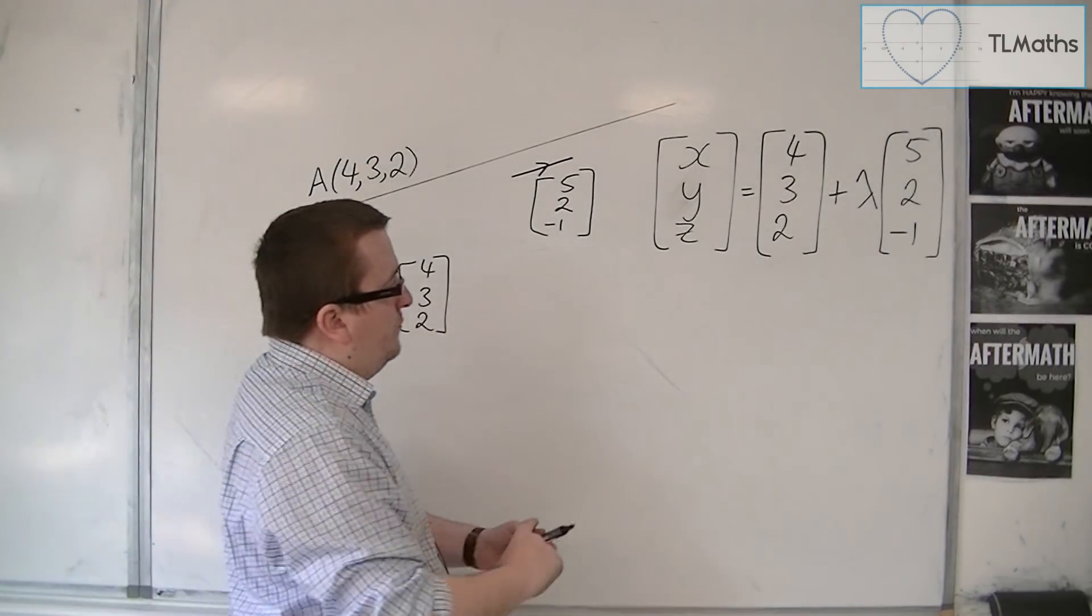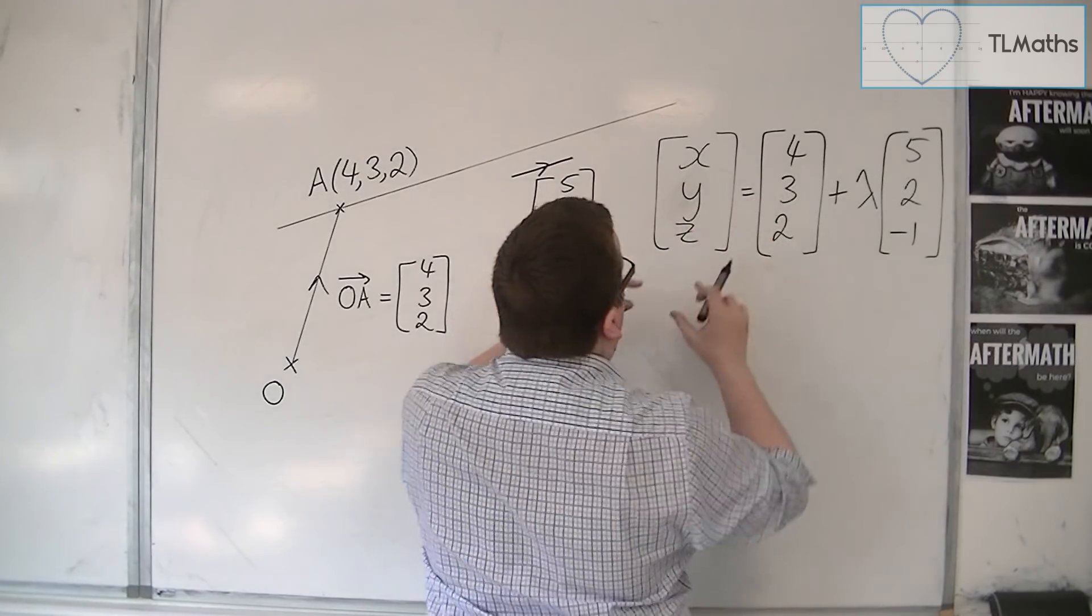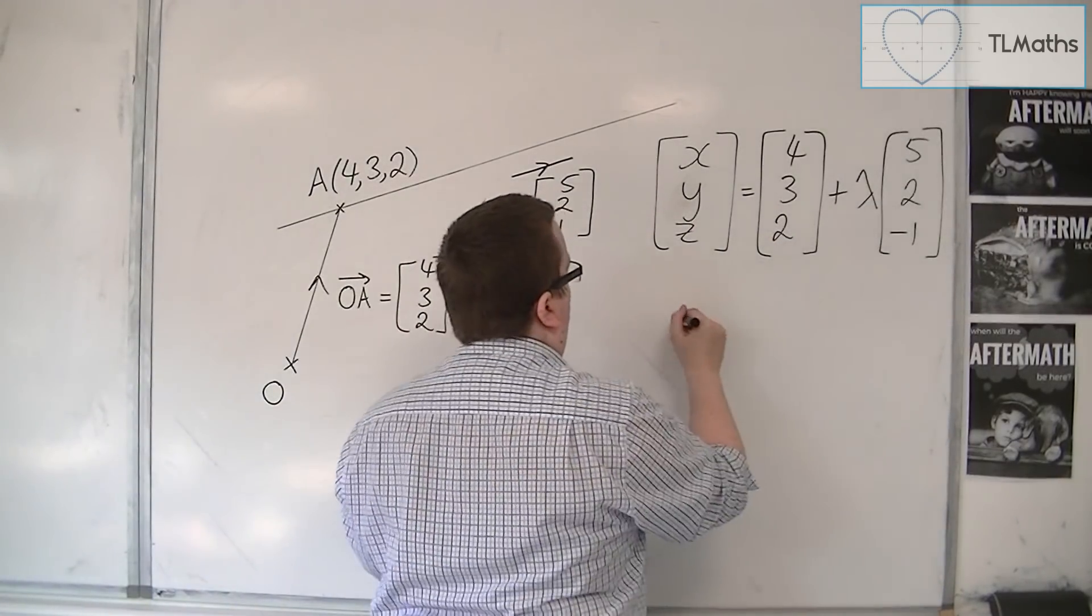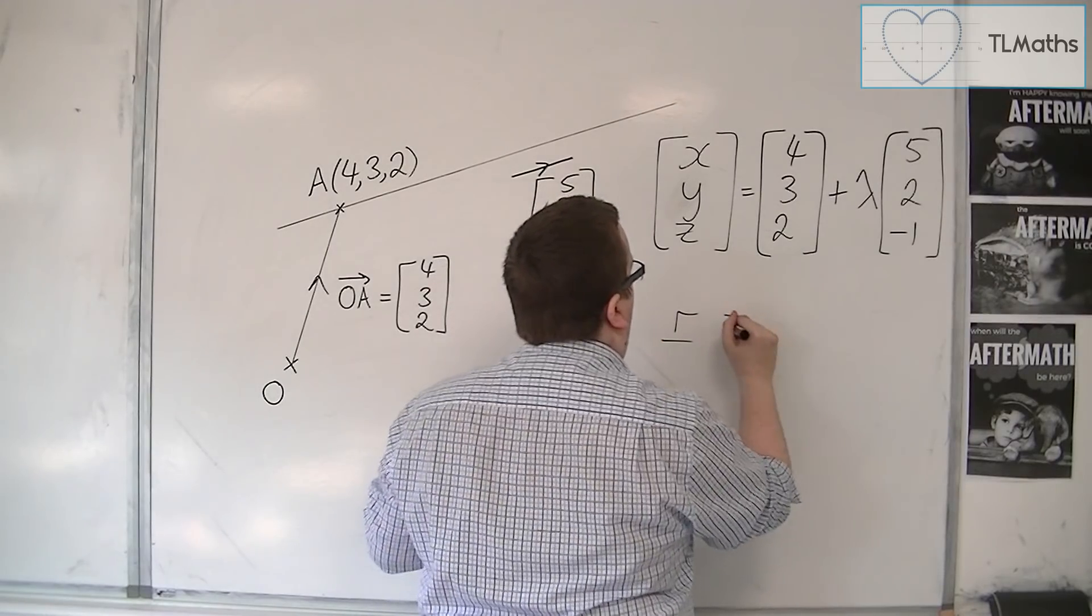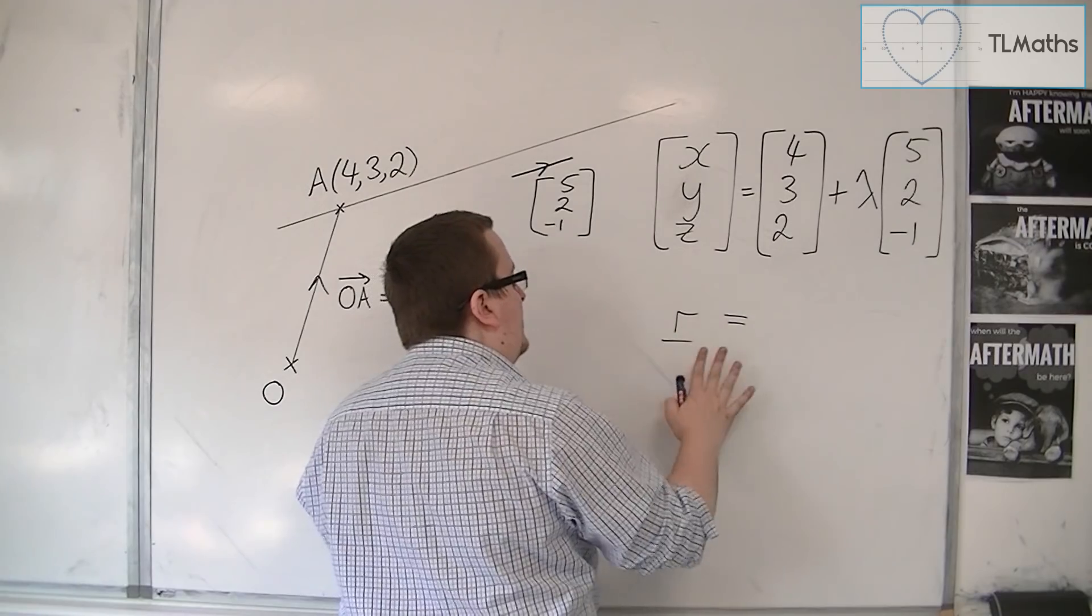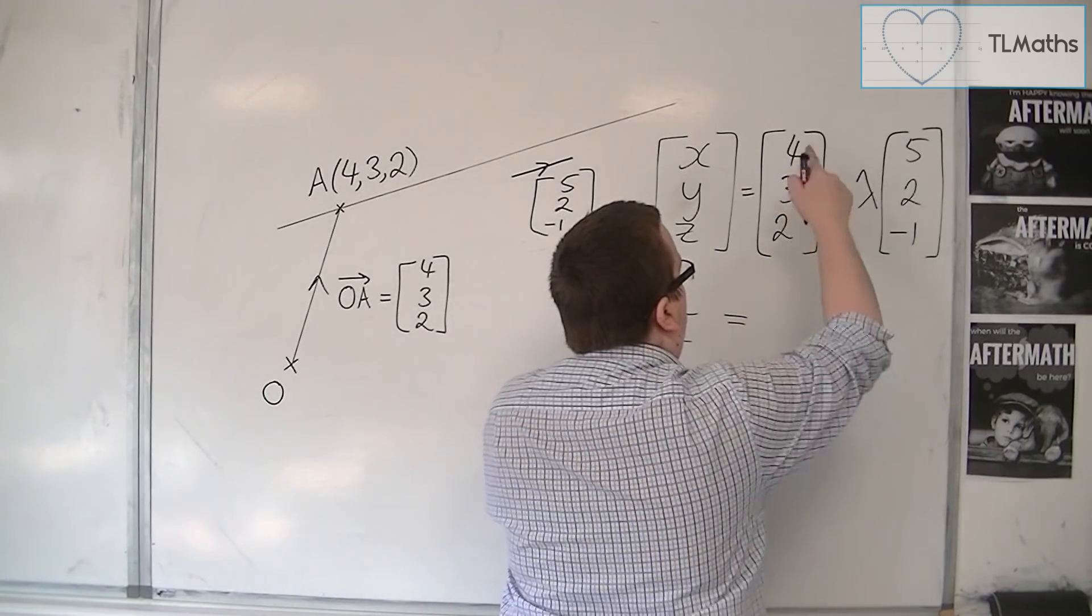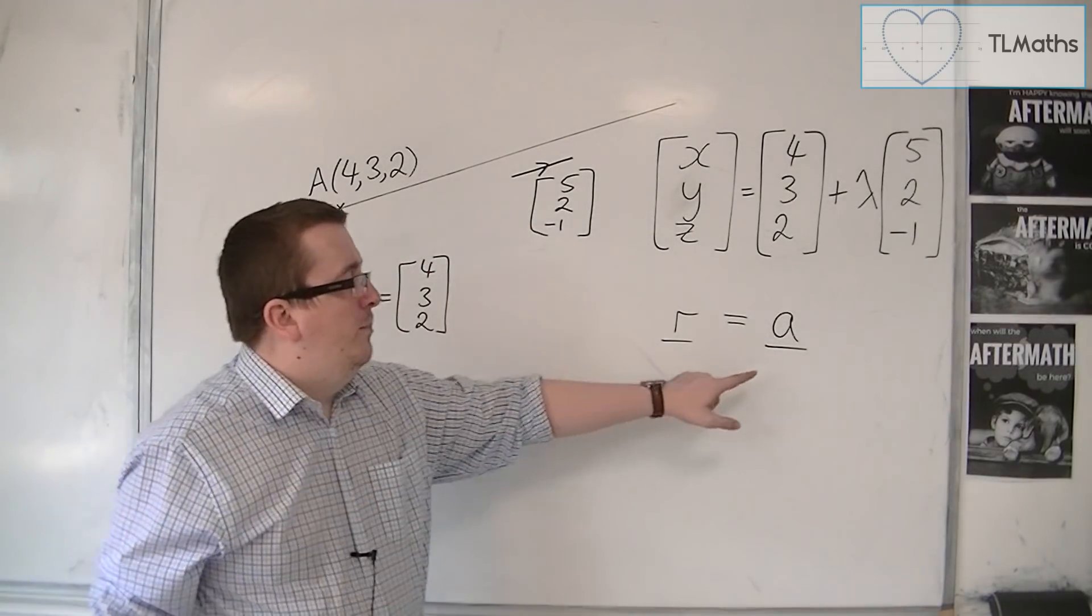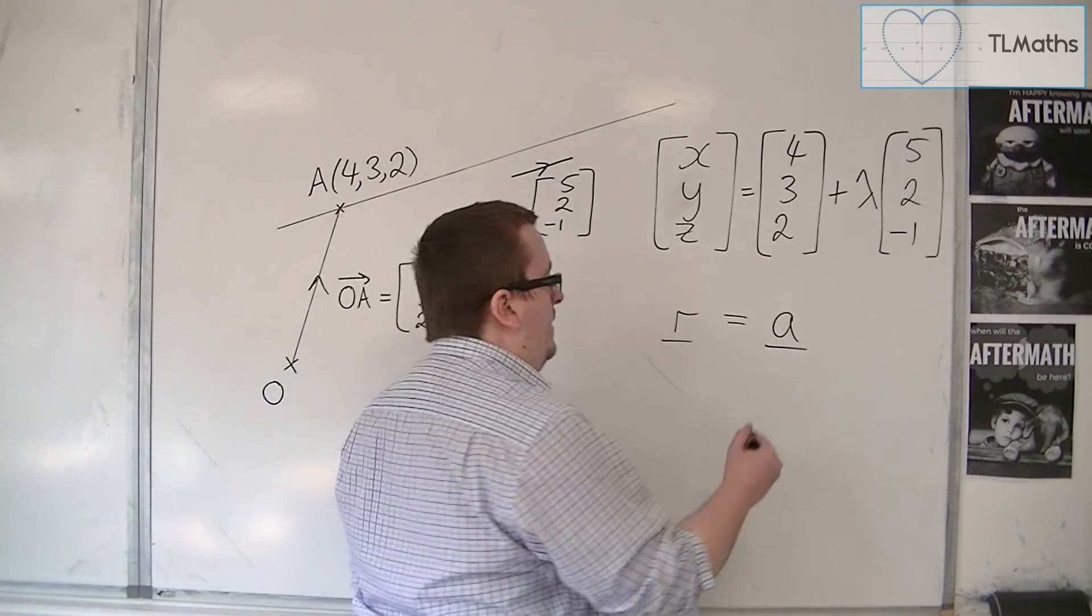So, in general, what we are looking at here, this x, y, z, we refer to as R. So R is this x, y, z, and it is given by some position vector, so this is the position vector of a point on the line.